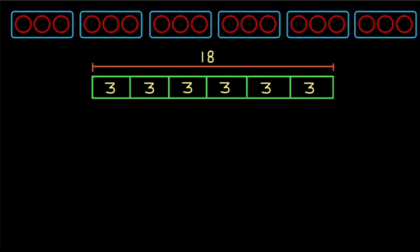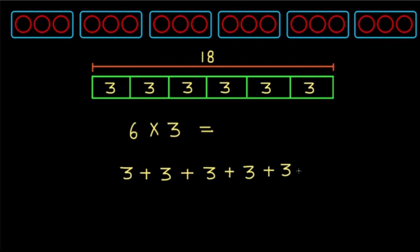We can also represent this using a bar diagram. Both of these representations show the equation six times three, or six groups of three. We can also make this an addition equation: three plus three plus three plus three plus three plus three. We call this repeated addition because we add the same number multiple times.